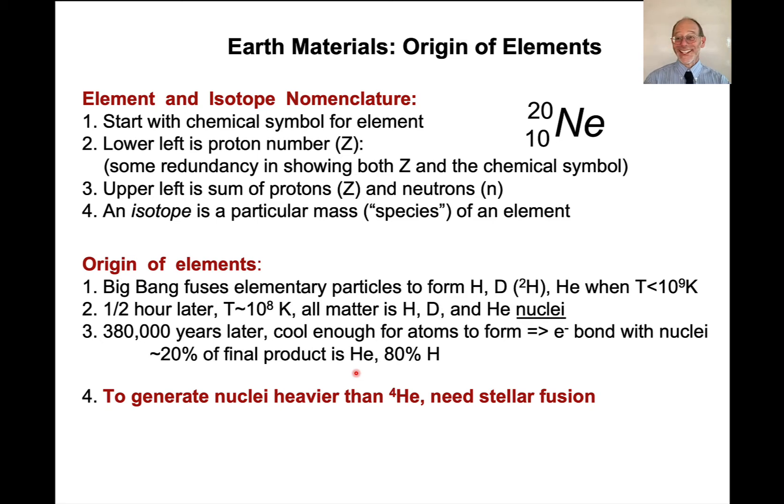So the final product that you get is about 20% helium and about 80% hydrogen. Well, clearly we are here and we're not made of hydrogen and helium. So some other process has to have occurred to form all of the other elements that make up us and minerals and so on.